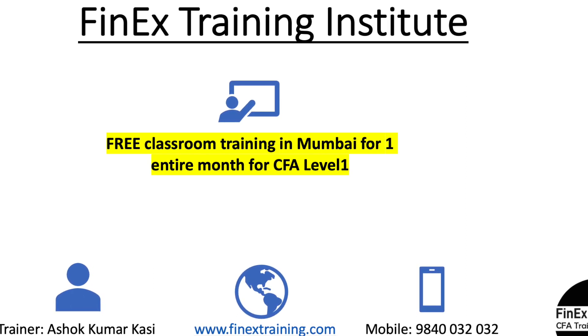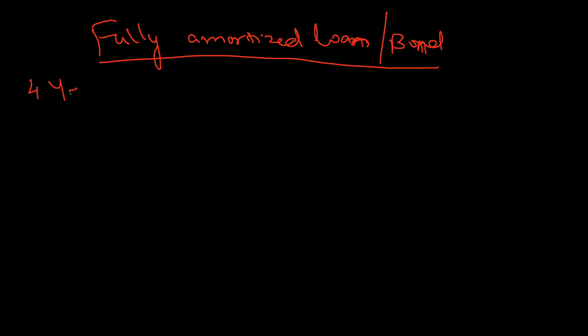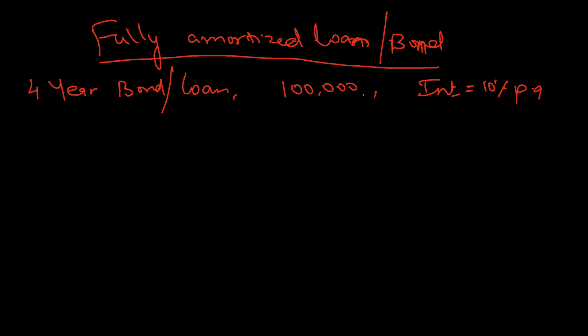So how to calculate a fully amortized loan — you can also call this a fully amortized bond. This concept applies to fully amortized bonds and home loans. A home loan is also fully amortized, where at the end the outstanding principal will be zero. We are going to see how the outstanding principal comes to zero and how the payments work.